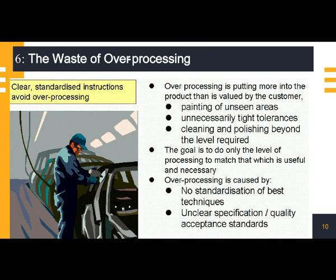Number six: the waste of over-processing. Over-processing is where we use inappropriate techniques, oversized equipment, work to tolerances that are too tight, or perform processes not required by the customer. All of these things cost us time and money. One of the biggest examples of over-processing is the mega machine that can do an operation faster than any other, but every process flow has to be routed through it, causing scheduling complications and delays. In lean, small is beautiful.